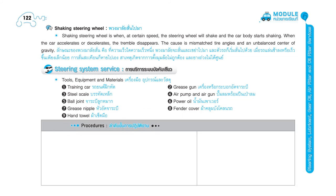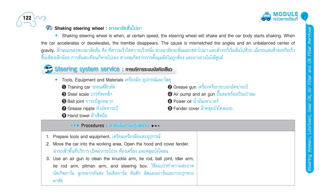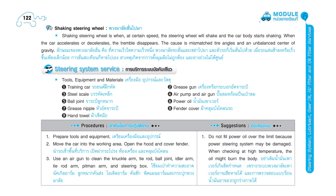Page 123. Procedures: prepare tools and equipment, move the car into the working area, open the hood and cover the fender. Use an air gun to clean the knuckle arm, tie rod, ball joint, idler arm, tie rod arm, pitman arm, and steering box. Suggestion: do not fill power oil over the limit because the power steering system may be damaged. When checking at high temperature, the oil might burn the body.